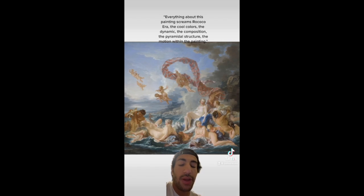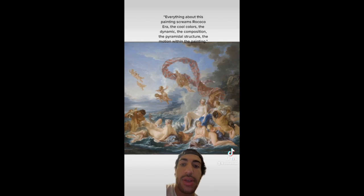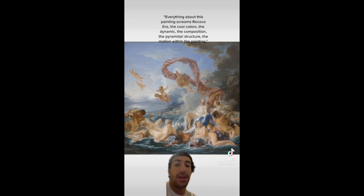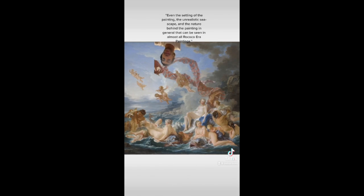Just the painting as a whole is a perfect archetype for the Rococo style — all the way from the mythological subject imbued with eroticism. Everything in the painting screams Rococo era: the cool colors used, the dynamic of the painting, the composition, even the pyramidal structure, the motion shown, and the setting — the nature and the unrealistic seascape. That's all Rococo. The nature behind it, everything.